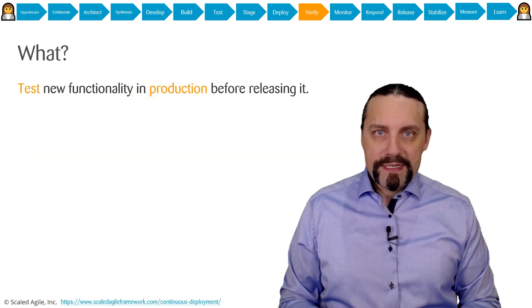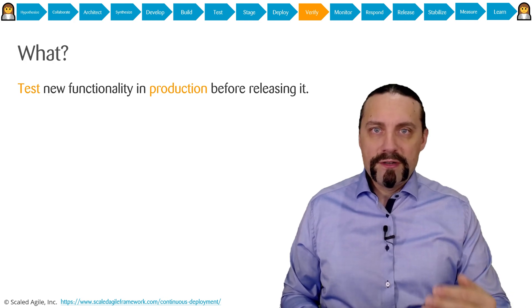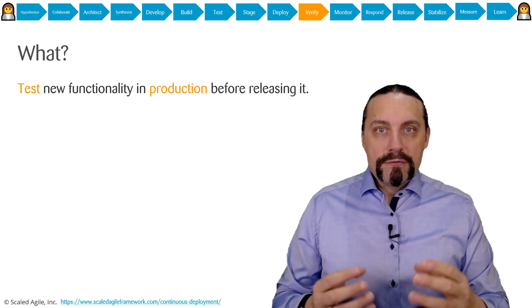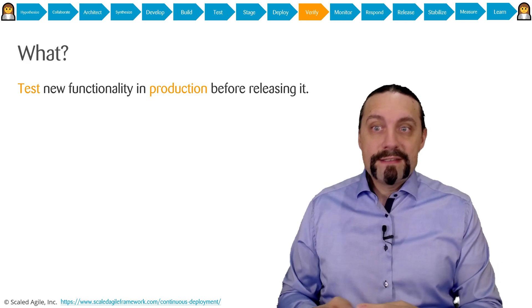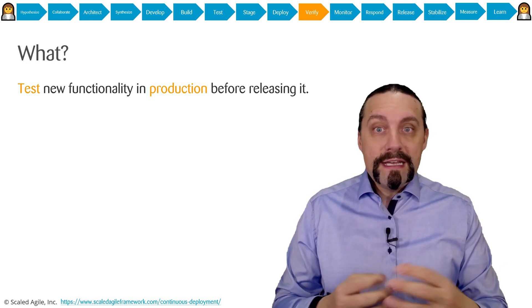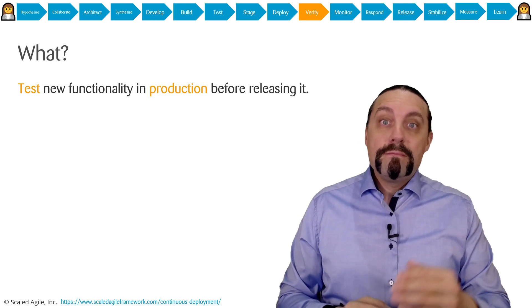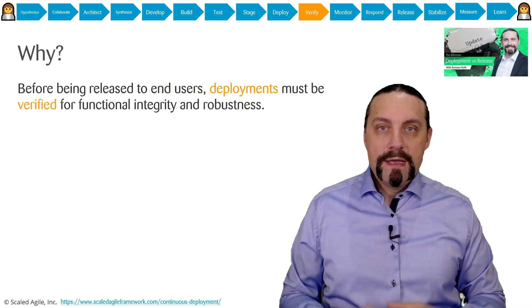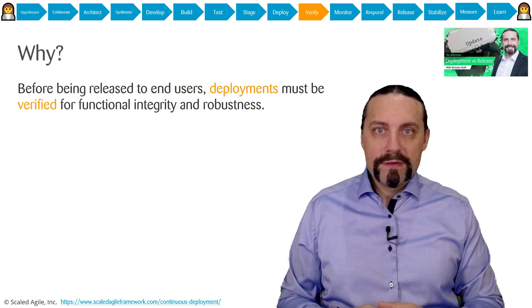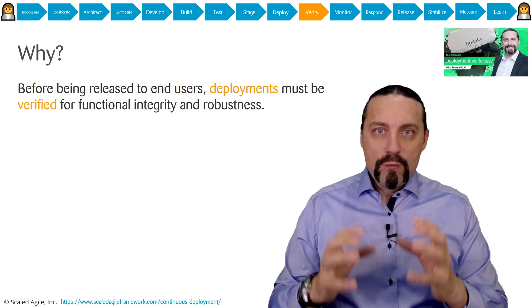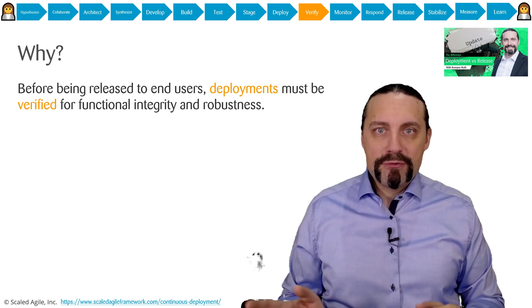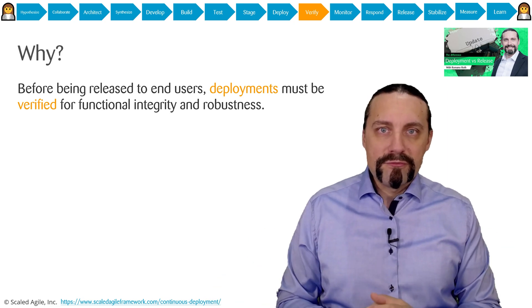In the deploy step, we have continuously deployed our package into the production environment. Now it is time to test this new functionality in the production environment before we are releasing it to our users. As discussed before in many of my videos, one of the cornerstones of DevOps is that we separate deployment from release.